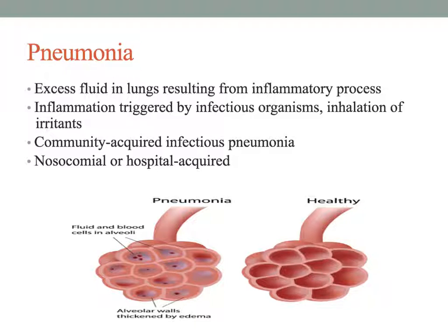Other risk factors include being an older adult, the presence of chronic comorbidities, and recent exposure to respiratory or influenza infections. An elderly patient who acquires influenza can easily develop pneumonia. Comorbidities that specifically increase risk include chronic obstructive pulmonary disease, and sometimes asthma can also put patients at higher risk for acquiring pneumonia.